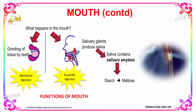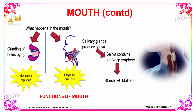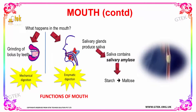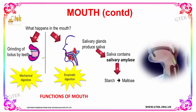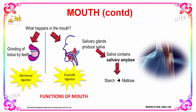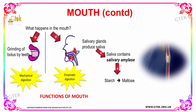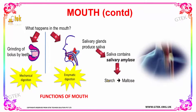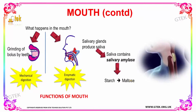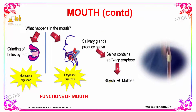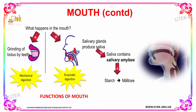Let us see what happens in the mouth in the case of mechanical and chemical digestion. In mechanical digestion, your teeth will be grinding the food into smaller particles which are further digested. Whereas in enzymatic digestion, the salivary glands produce saliva, and the saliva contains the enzyme salivary amylase. This salivary amylase will break down the starch in your food into maltose — this is your chemical or enzymatic digestion.